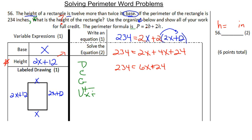Now we've got 234 equals 6X plus 24. By collecting like terms, I've gotten it. Then, we're going to subtract 24 from both sides. We're going to get 210 equals 6X.